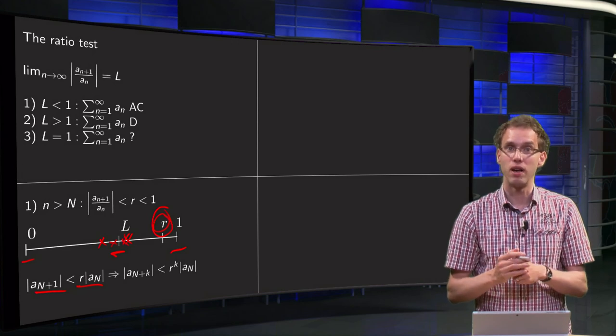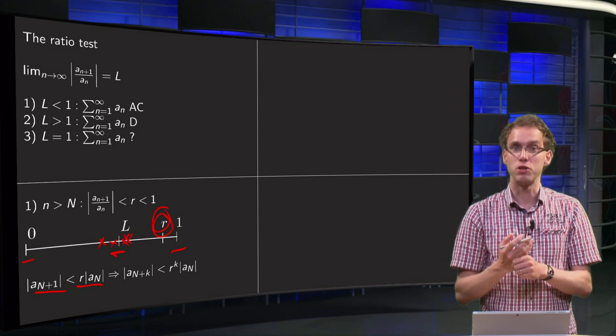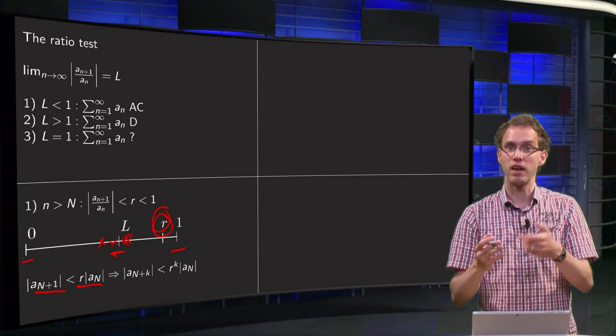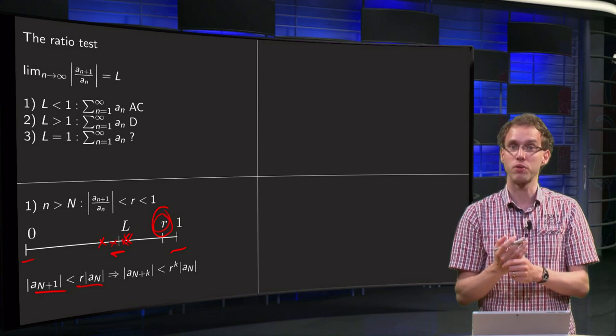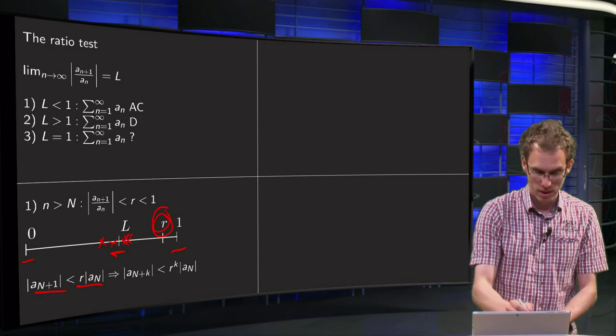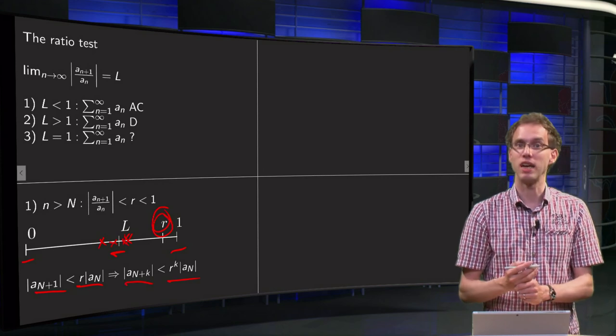You can do this then repeatedly, then you know a_{m+2} is smaller than r times a_{n+1} is smaller than r times a_n, smaller than r squared times a_n, or a_{m+k} is smaller than r to the k times a_n.